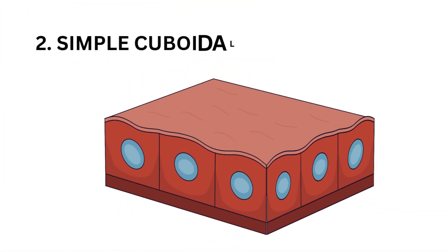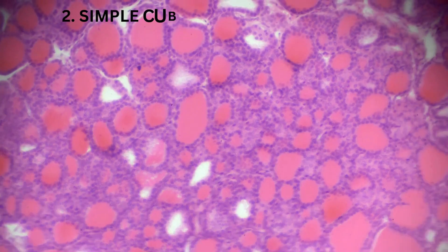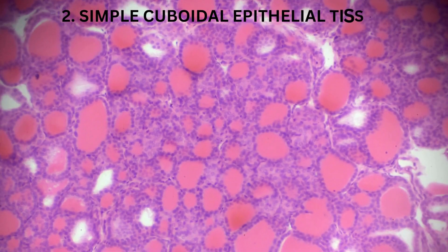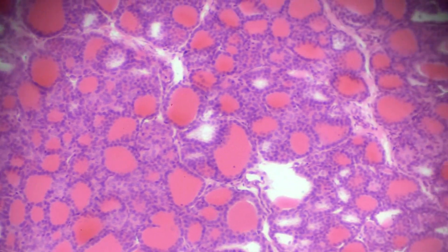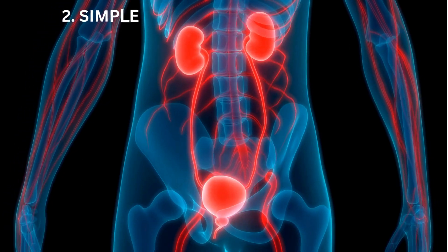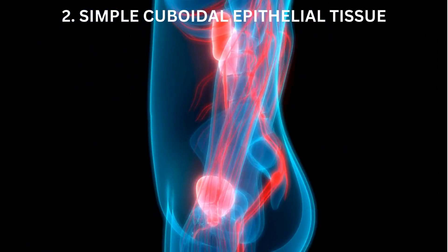Simple cuboidal epithelium consists of a single layer of cube-shaped cells. It is present in glands and kidney tubules, where secretion and absorption occur.